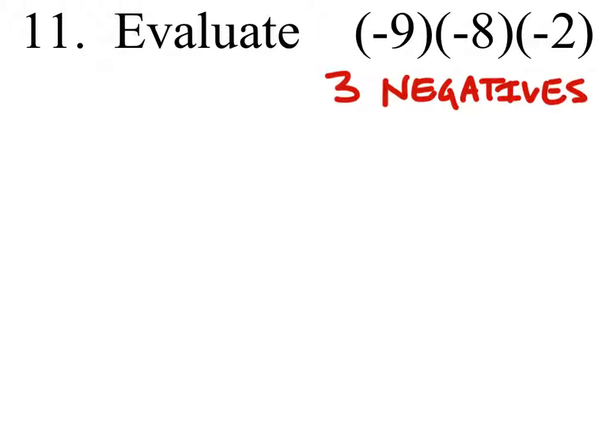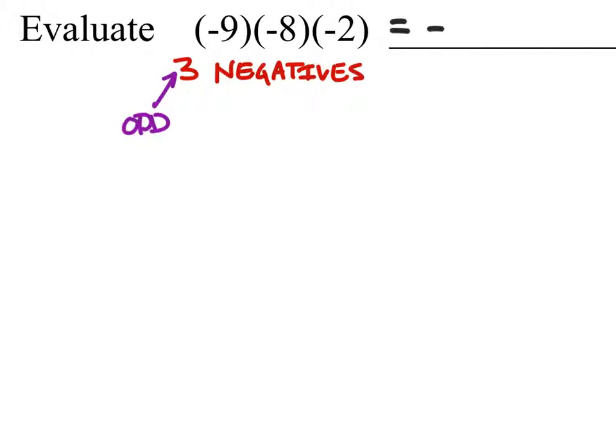And the reason that's important is because depending on the number of negatives we have in a multiplication problem, we'll determine if the answer is positive or negative. Well, this specific problem has 3, which is odd. And since that's the case, we know that the answer is negative, which we can write out like this.